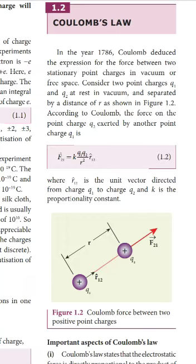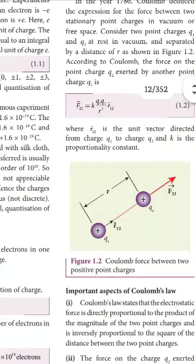According to Coulomb's Law, the force on the point charge q2 exerted by the point charge q1 — charge q1 exerts a force on q2, and in reverse, q2 will exert a force on q1. The force between the two point charges may be an attractive force or a repulsive force. If the charges are opposite, there is an attractive force; if the charges are the same, there is a repulsive force.